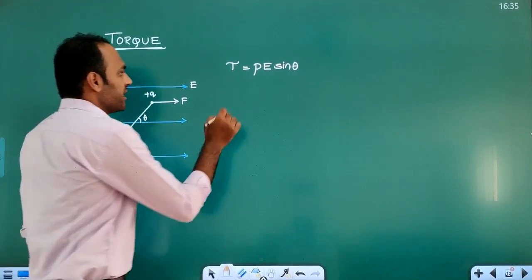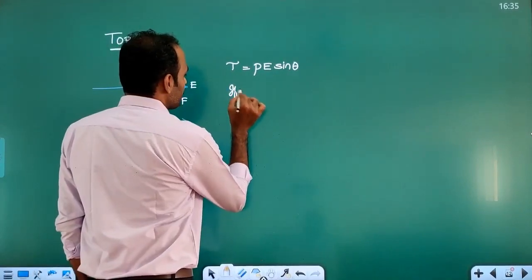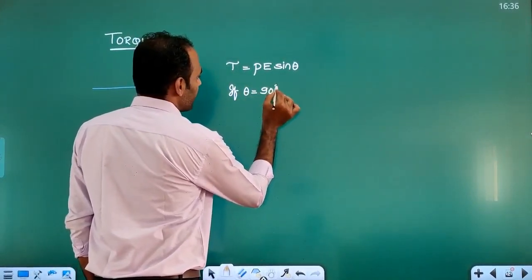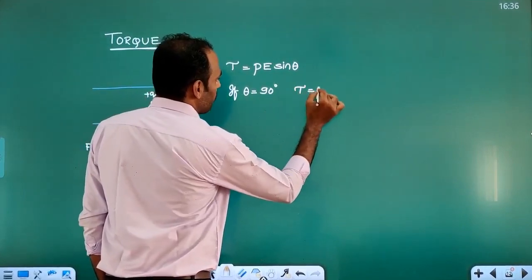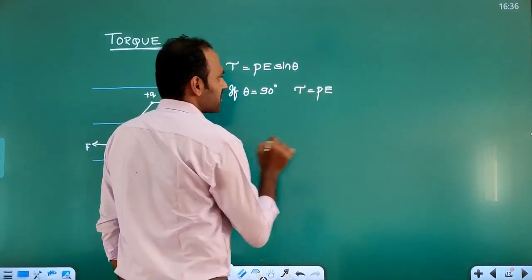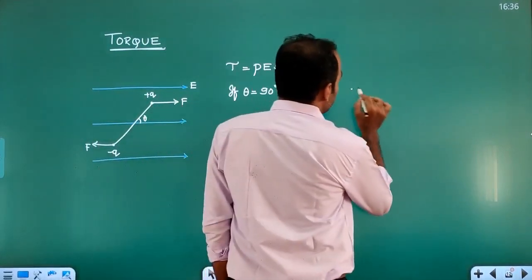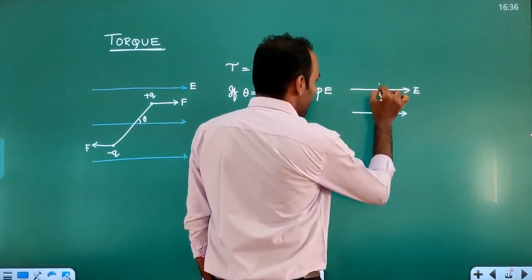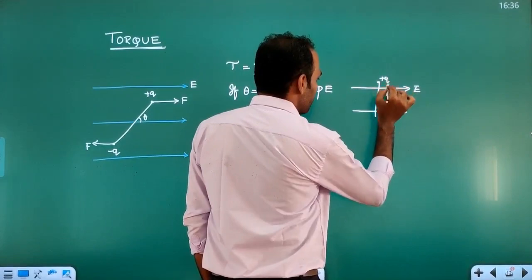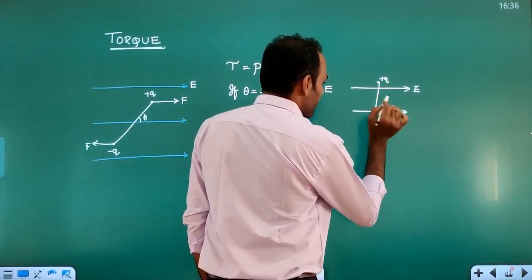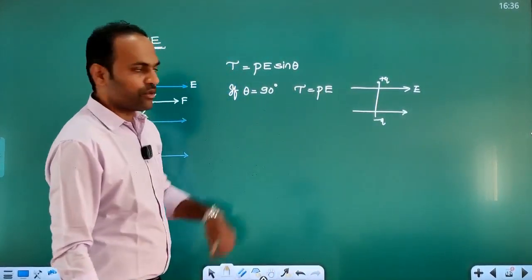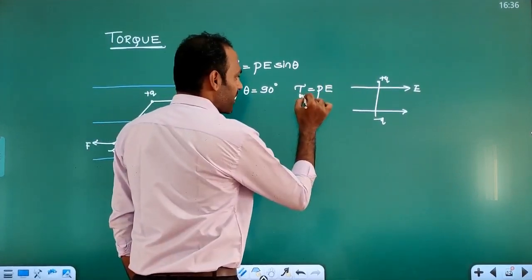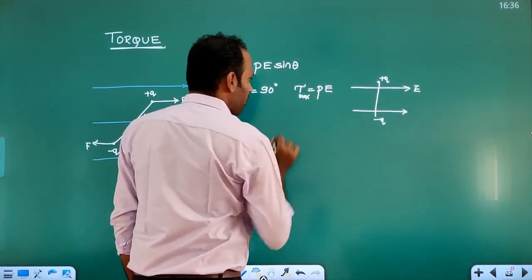This torque will be maximum or minimum depending on theta. If theta is equal to 90 degrees, then torque will be equal to PE — that is the maximum torque. So theta equal to 90 degrees means the dipole is perpendicular to the electric field, and the torque on it is said to be maximum.